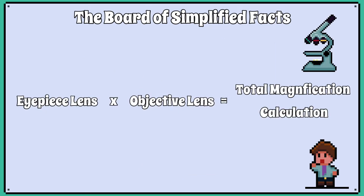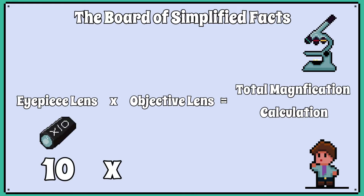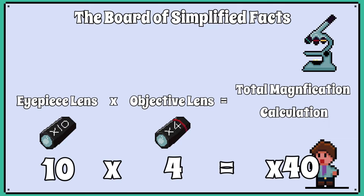To calculate the total magnification, all we do is multiply the eyepiece lens magnification by the objective lens magnification being used. For example, the eyepiece lens ×10 multiplied by the objective lens ×4 gives us a total magnification of ×40.